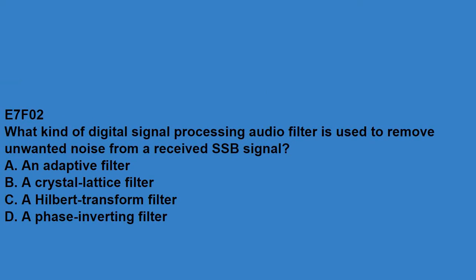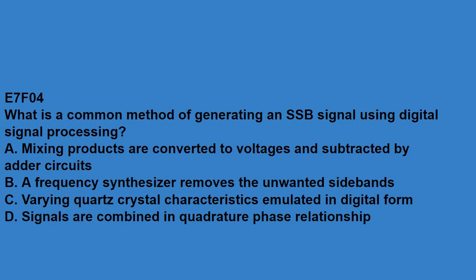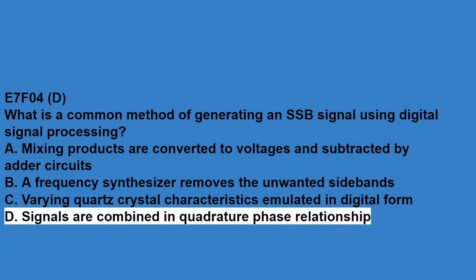E7F02, what kind of digital signal processing audio filter is used to remove unwanted noise from a received SSB signal? An adaptive filter. E7F03, what type of digital signal processing filter is used to generate an SSB signal? That is a Hilbert transform filter. E7F04, what is the common method of generating an SSB signal using digital signal processing? Signals are combined in quadrature phase relationship.